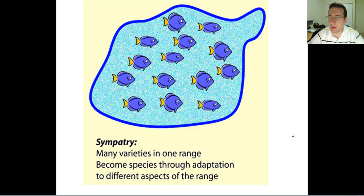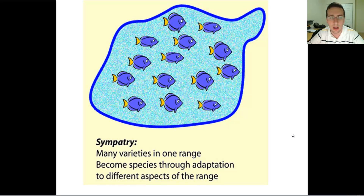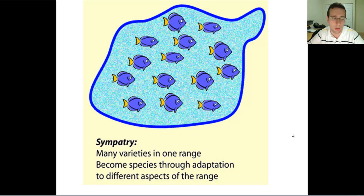Another kind of speciation event could happen within the same population without necessarily having a physical barrier or physical separation between the organisms. You may ask yourself, how could that possibly happen if gene flow can continue between the species? Well, there's got to be some other sort of reproductive barrier, including something like mechanical, behavioral, temporal, or even gametic isolation to separate the species.